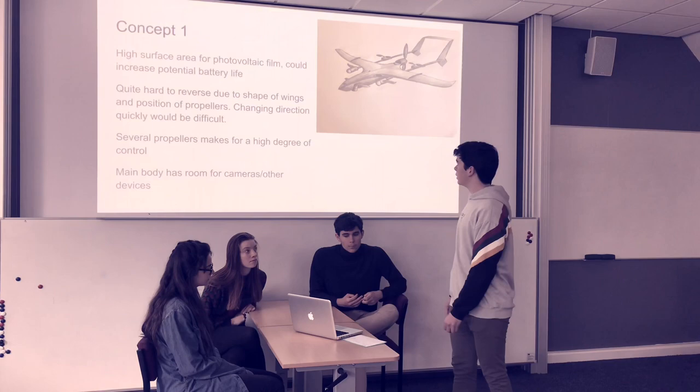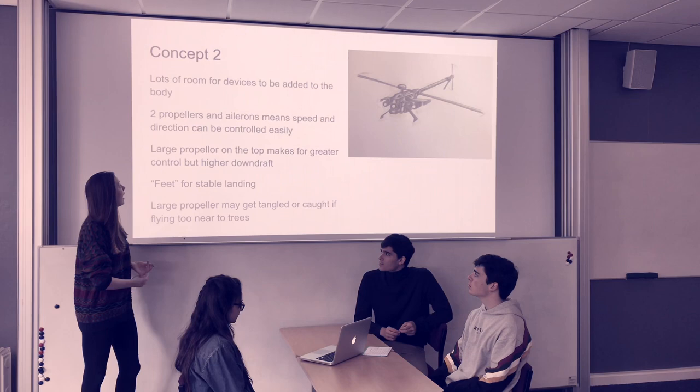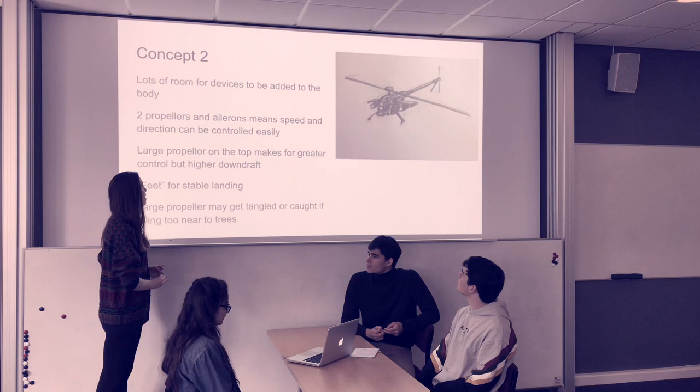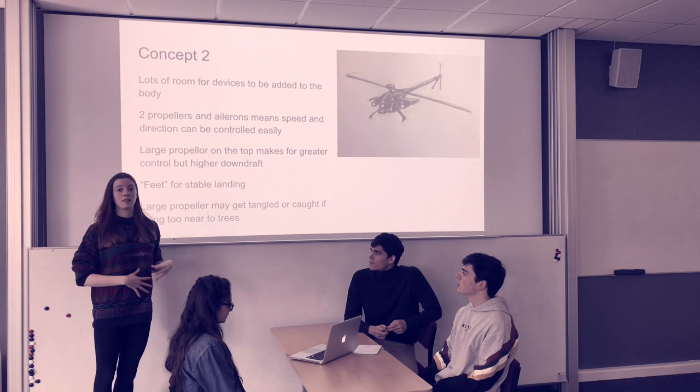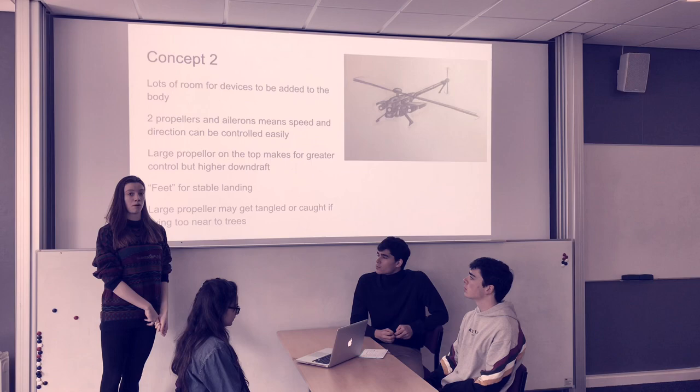Concept two has a large volume-to-surface-area ratio, meaning more devices can be added inside the body. It also has two propellers — one controlling vertical direction and one horizontal — giving it a lot more control in its movement. The feet on the bottom make it more stable when landing, and the propeller on top means it can vertically take off, which is a lot better for a mountainous environment.